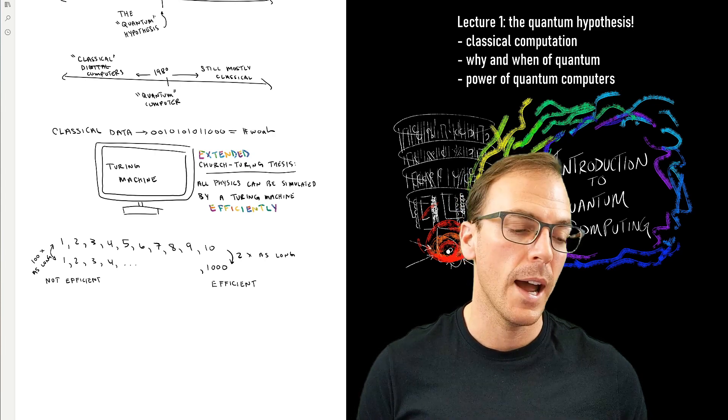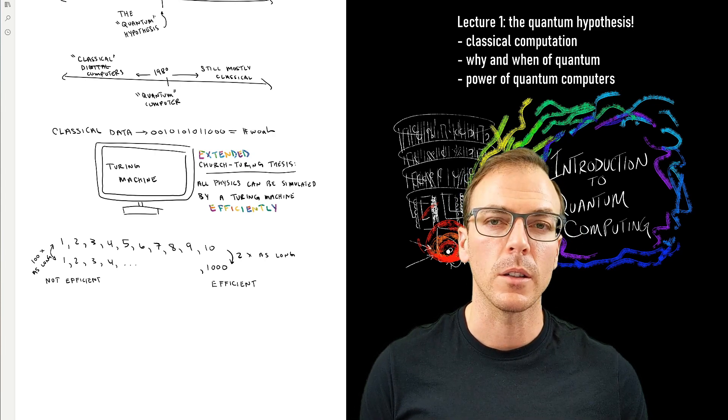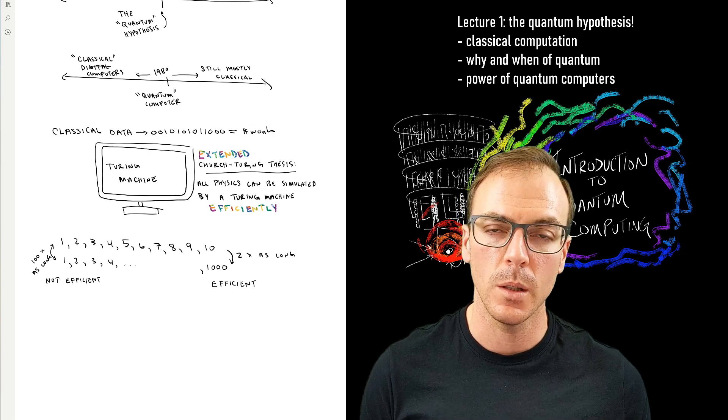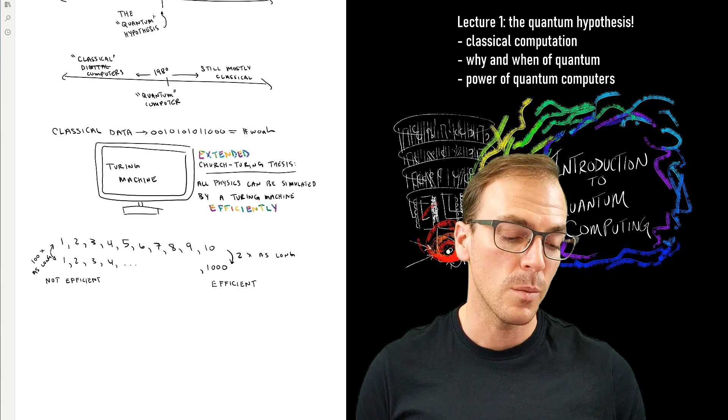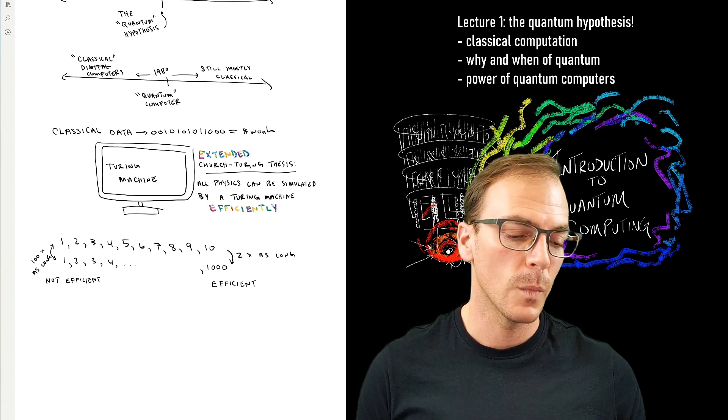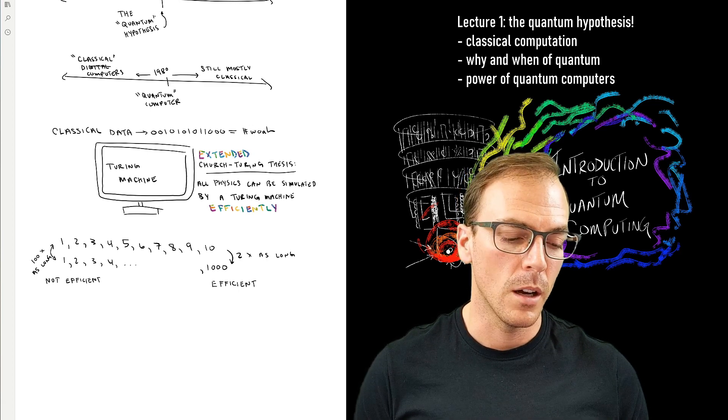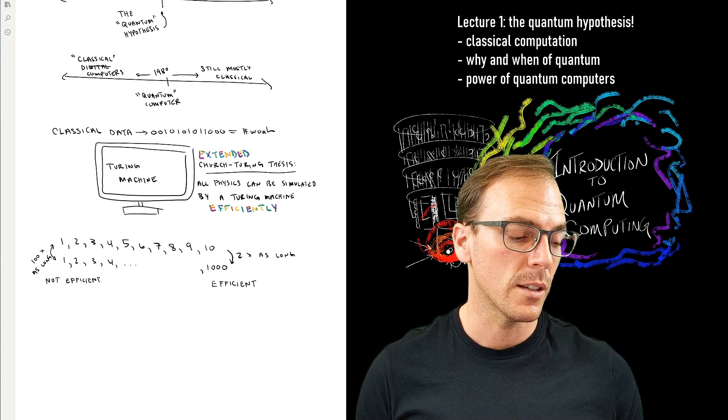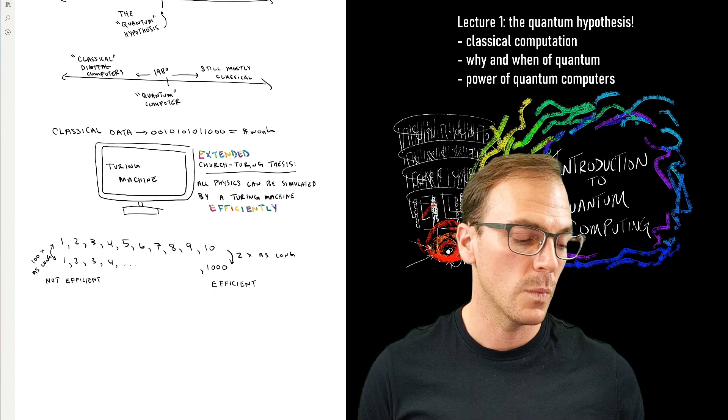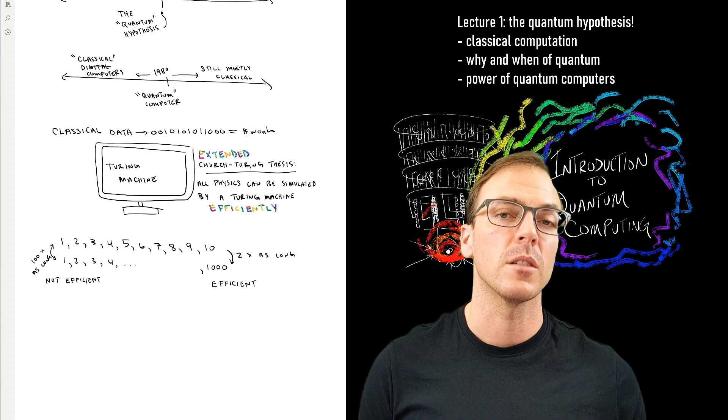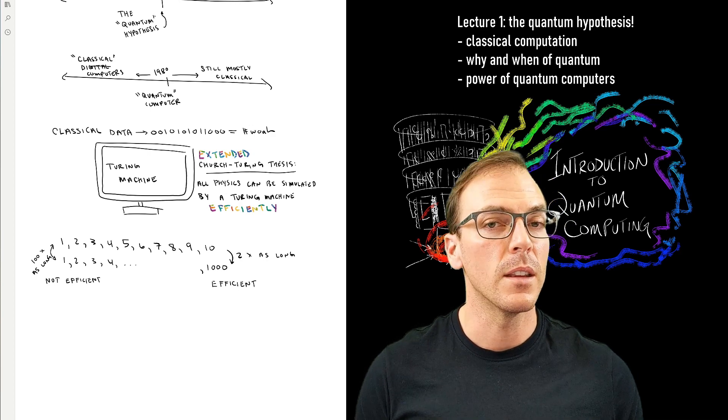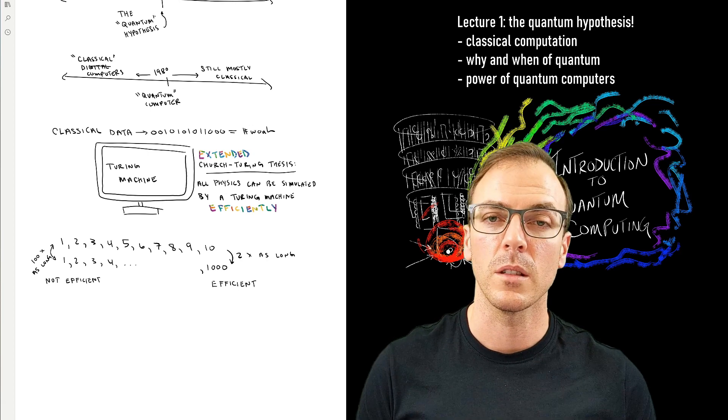So the statement of the Extended Church-Turing thesis is one that's using this notion of efficiency. So it says that as I add more particles in my universe that I want to simulate, then the Turing computer can continue to simulate that efficiently. So adding one more particle doesn't double, or the complexity of simulating that isn't going to grow exponentially in the number of particles in my universe that I want to simulate.